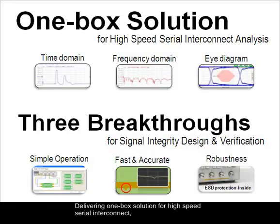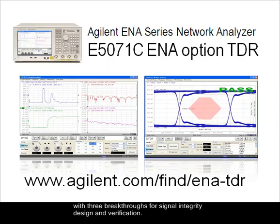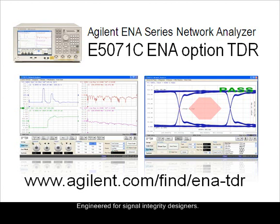Delivering one-box solutions for high-speed serial interconnect with three breakthroughs for signal integrity design and verification — the Agilent E5071C ENA Option TDR, engineered for signal integrity designers. For more information, visit our website at www.agilent.com.